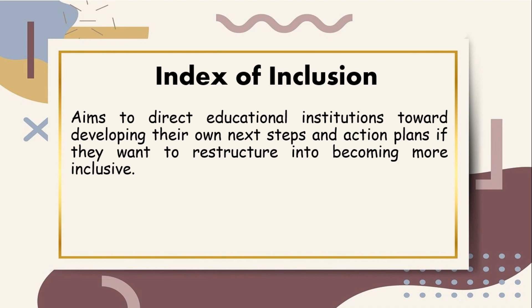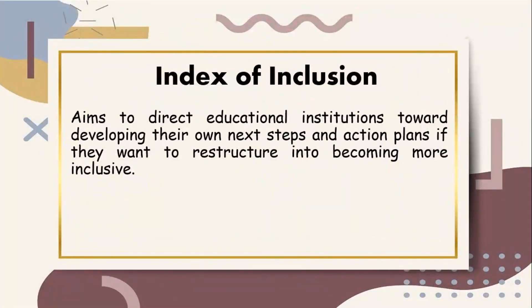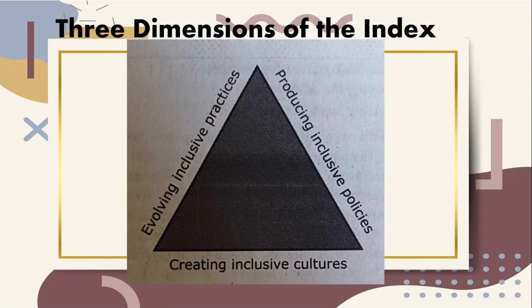It builds on good practice and organizes the index work around a cycle of activities which guides schools through stages of preparation, investigation, development, and review. Booth and Ainscow created a three-dimensional framework, explaining that these three dimensions — creating inclusive cultures, evolving inclusive practices, and producing inclusive policies — are interconnected and chosen to direct thinking about school change.